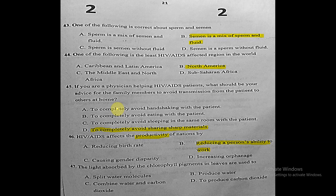Question forty-seven: the light absorbed by the chlorophyll pigments in leaves is used to do what? The correct answer is to split water molecules. This is also stated in the grade eight textbook.